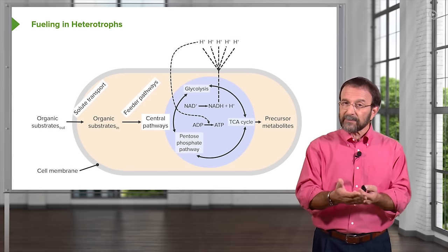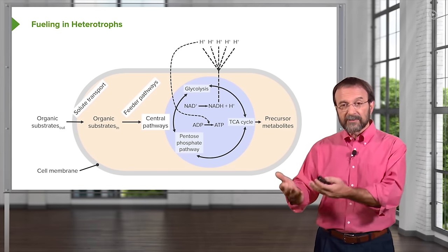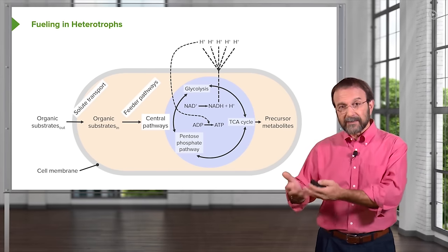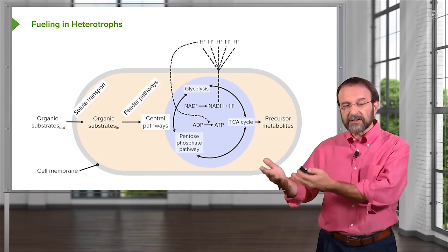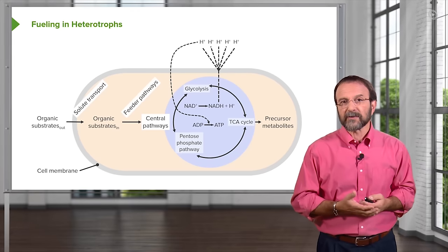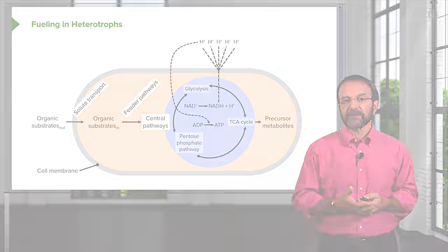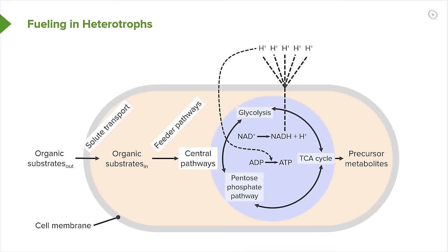The precursor metabolites then go to make the amino acids, which are then used for larger molecules. These are examples of bacteria that need to acquire the organic substrates preformed — they can't make them.